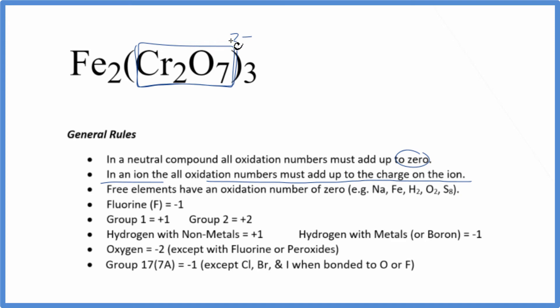So for the whole thing, three times two minus, all of these oxidation numbers gives us a minus six. Remember we said this was a neutral compound. All the oxidation numbers have to add up to zero.